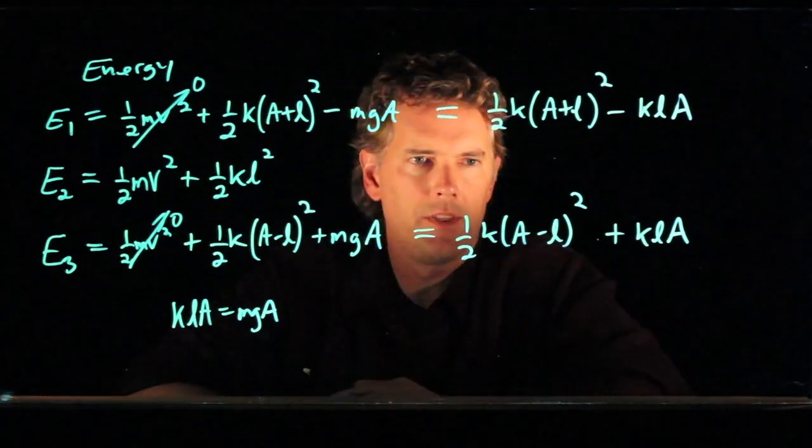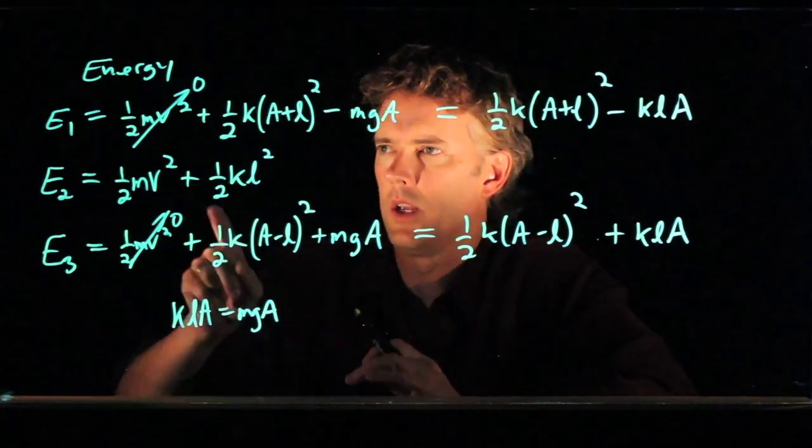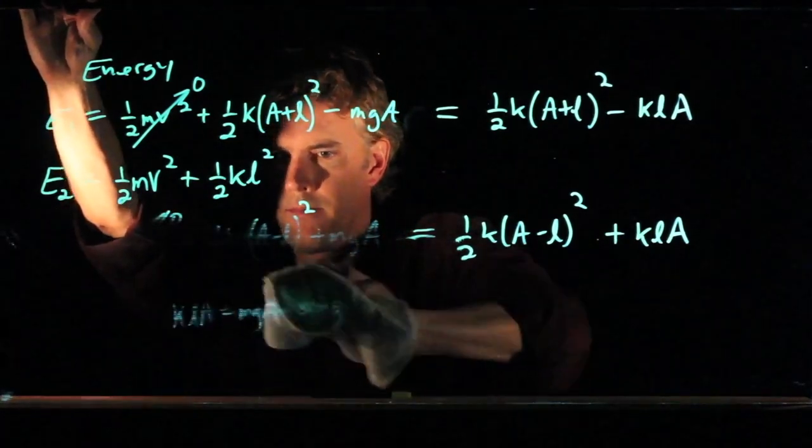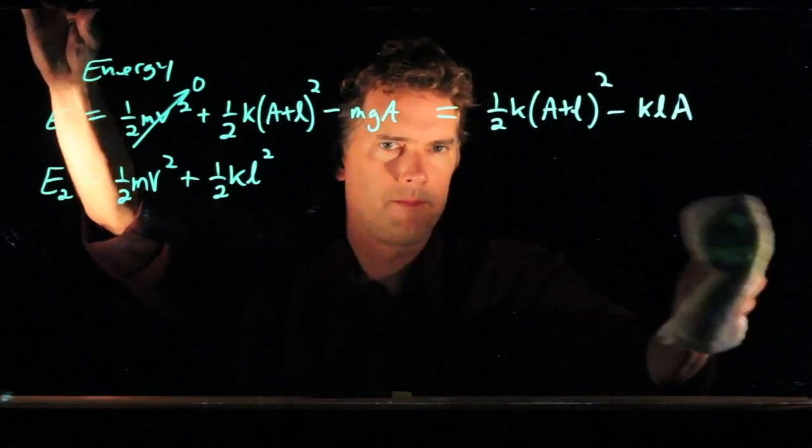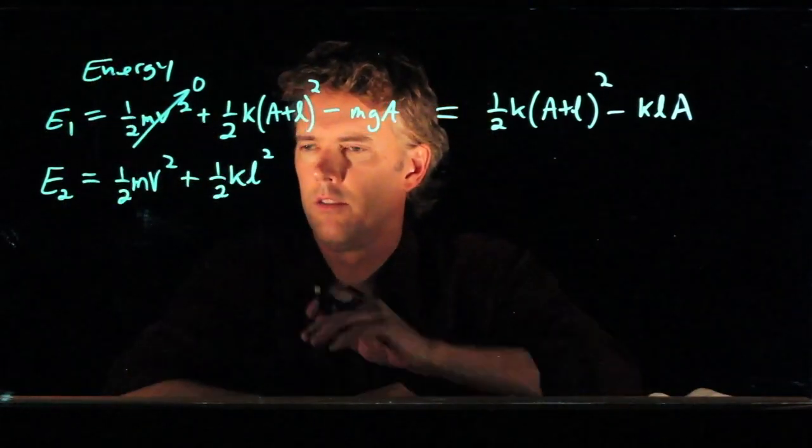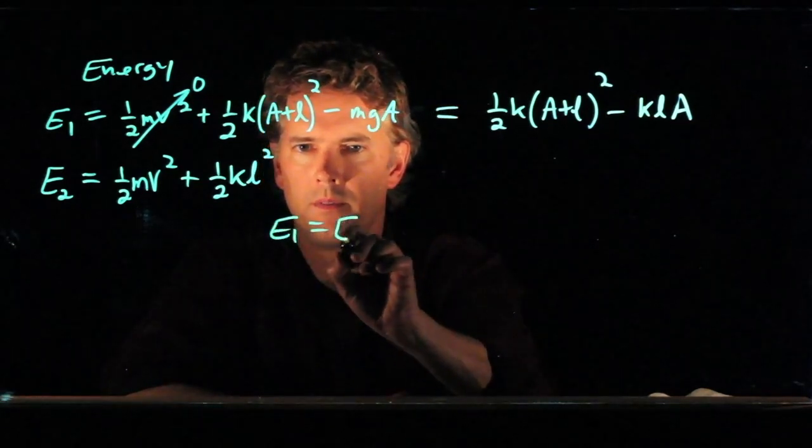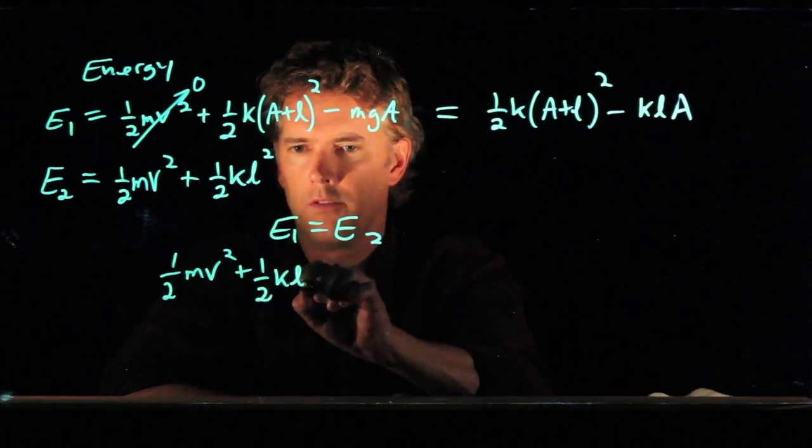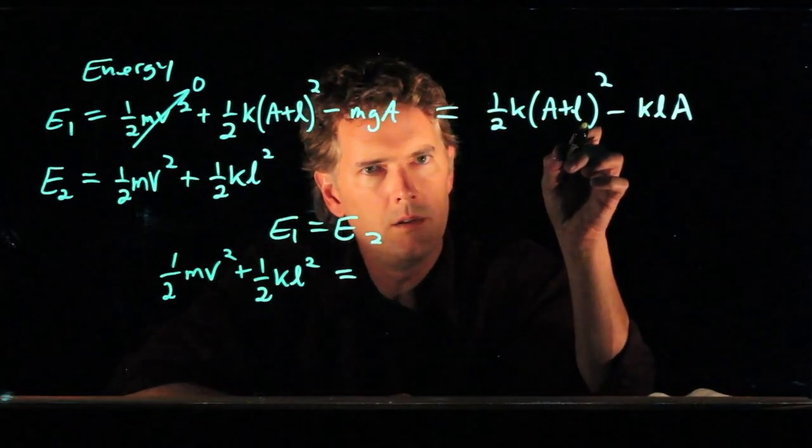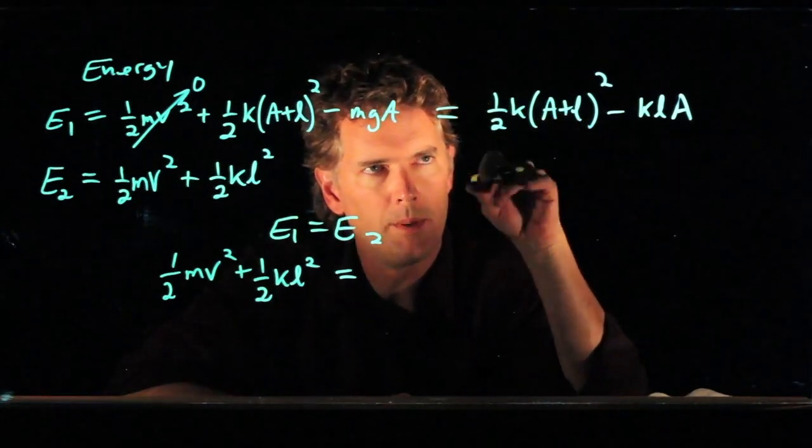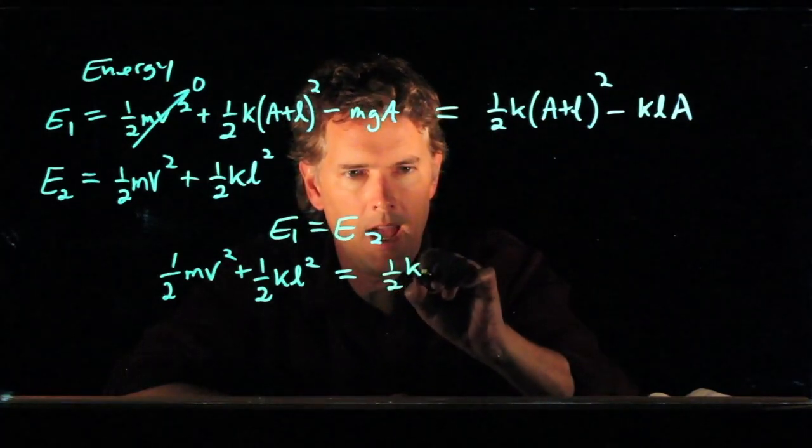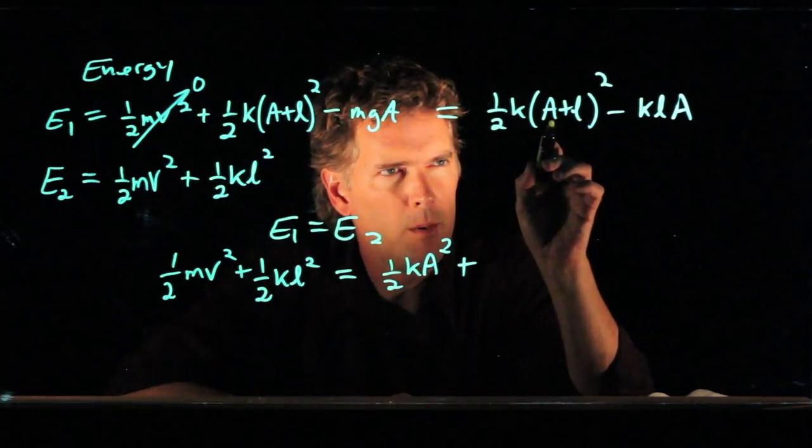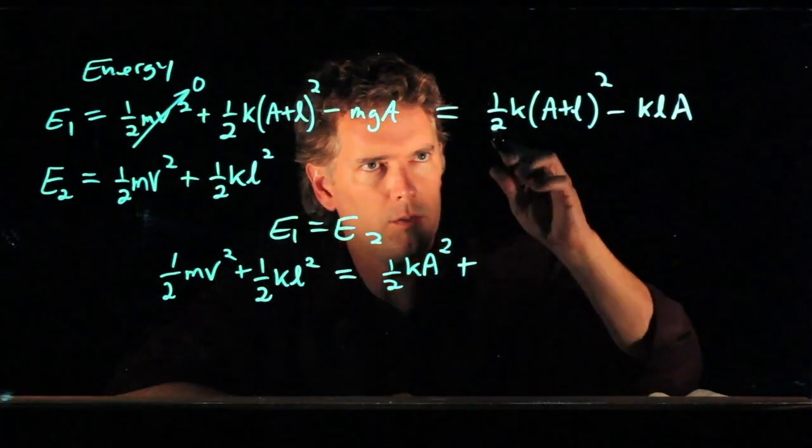All right, so to do that, we just set these energies equal. And why don't we take equation 1 and set it to equation 2. So if we say E1 equals E2, what do we have? So we have one-half MV squared plus one-half KL squared equals E2. And let's write that down here, but let's multiply it out. So we have one-half KA squared plus we've got to do the FOIL on this. So now we have 2AL in there, and that 2 is going to cancel with the one-half out in front.